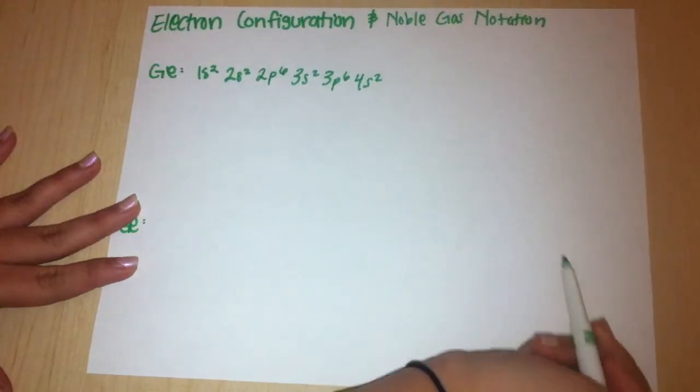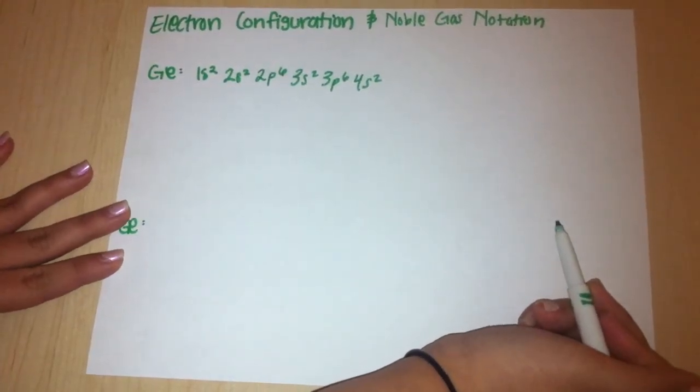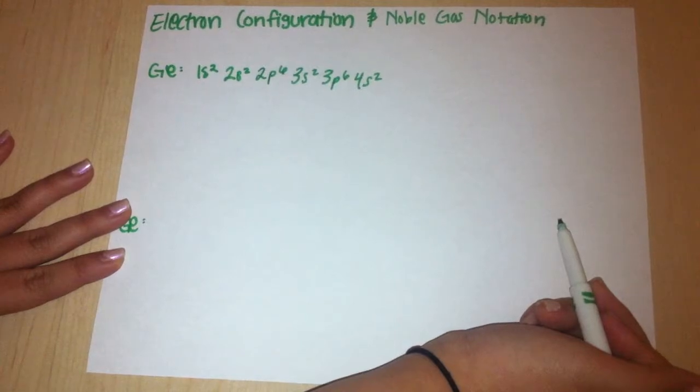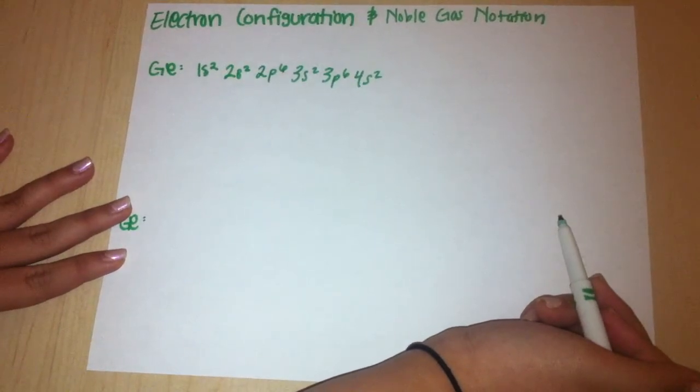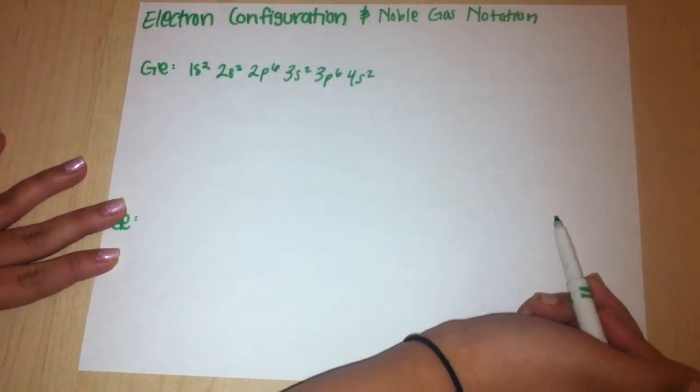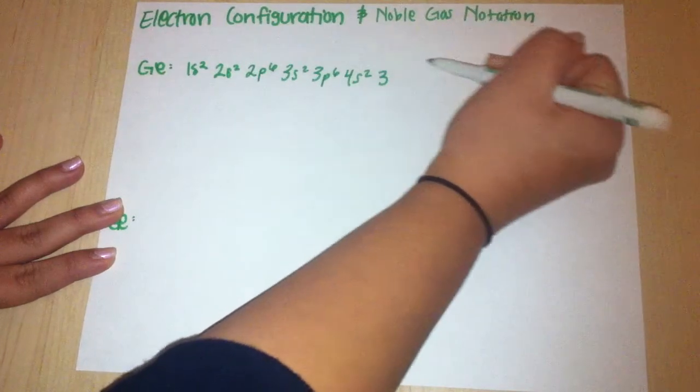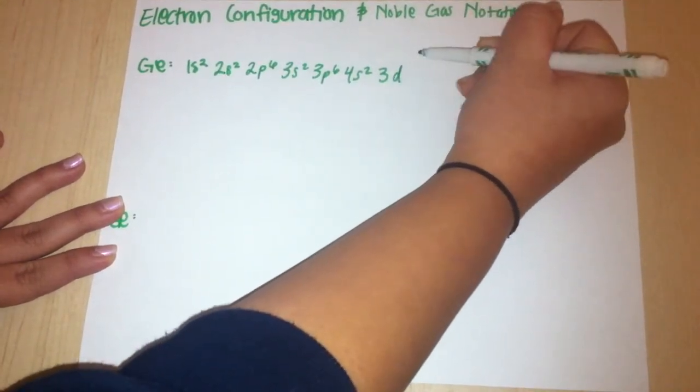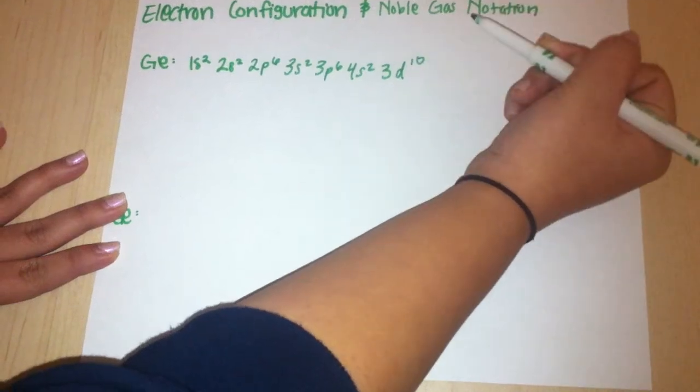Now we have hit the D block. The D block starts off on energy level 3 instead of number 4. However, when you get back to the P block, it goes back to normal and starts off with number 4 like the S block. So next, you would write a 3 because we are on level 3, a D because the block name, and a 10 because there are 10 elements.